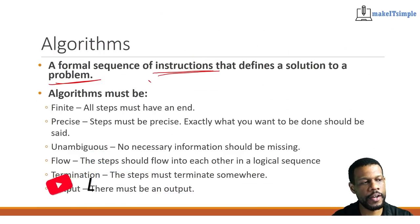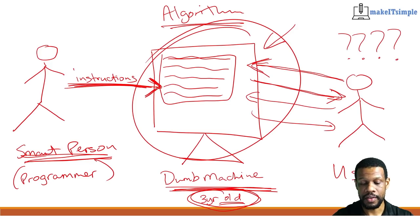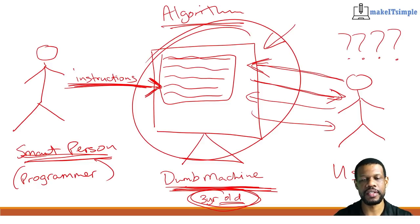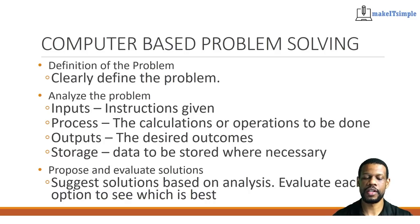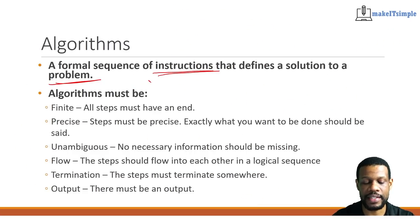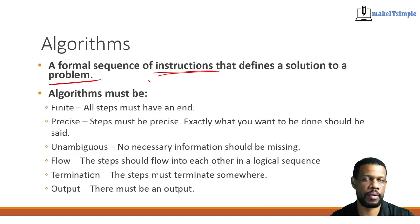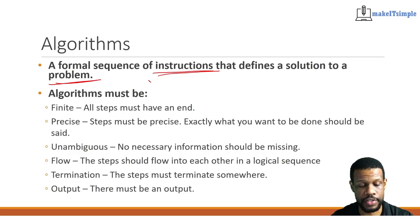In order for an algorithm to make sense, remember there is the dumb machine in the middle and you have to give information to it as simply as possible. In order for it to make sense, you need to make sure that the steps fall under the following characteristics.